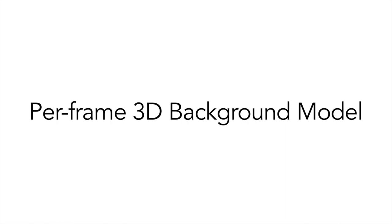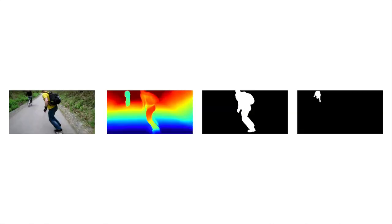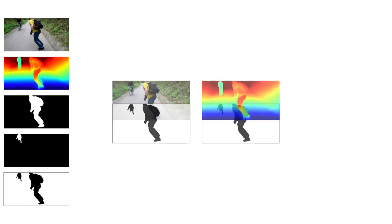To relax the assumption on the camera motion, our method predicts the layer on a per-frame basis without grounding to a global canvas. Specifically, given an input frame along with input mask and depth, we first estimate the complement of the union of the foreground mask. We then multiply the mask with the input RGB and depth to obtain masked inputs.